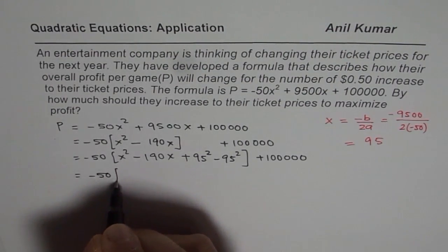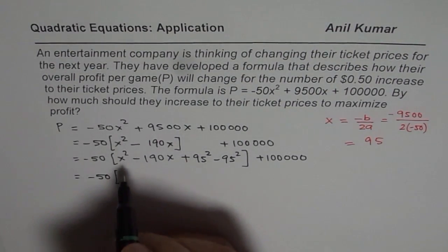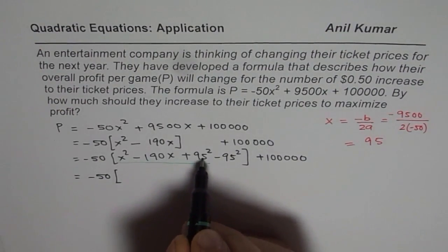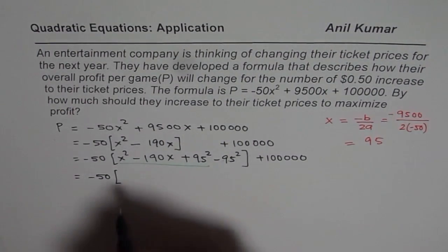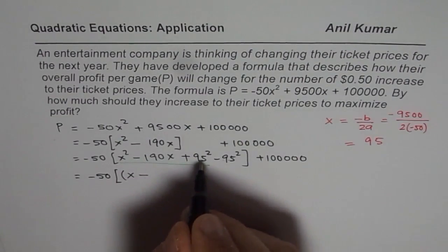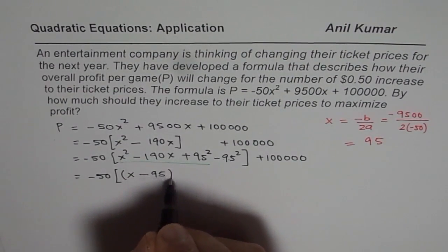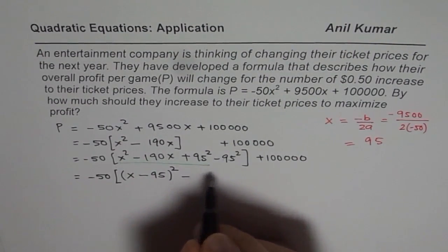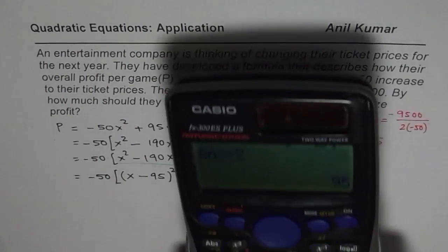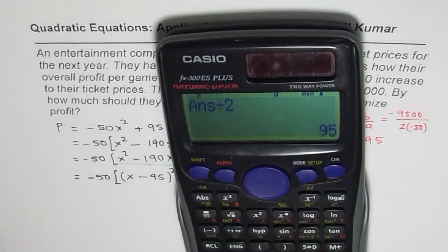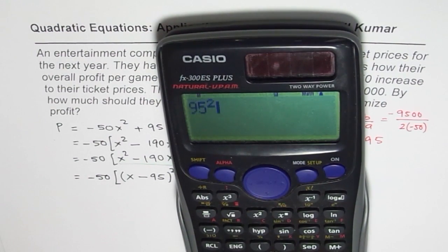So minus 50 and these three terms they become perfect square. And that step made it a perfect square. We can write this as x minus 95 whole squared. And then we have minus 95 squared. So we already have 95 here. Anyway we can say answer squared, so 95 squared. It doesn't matter.